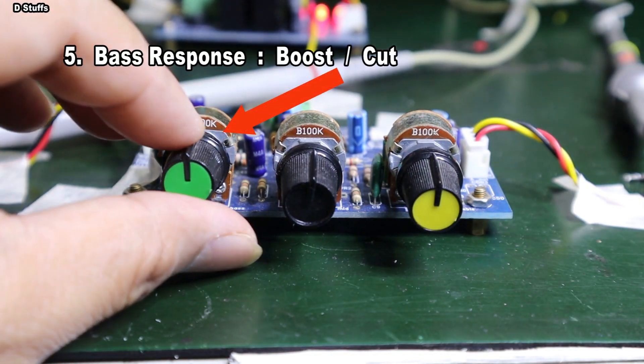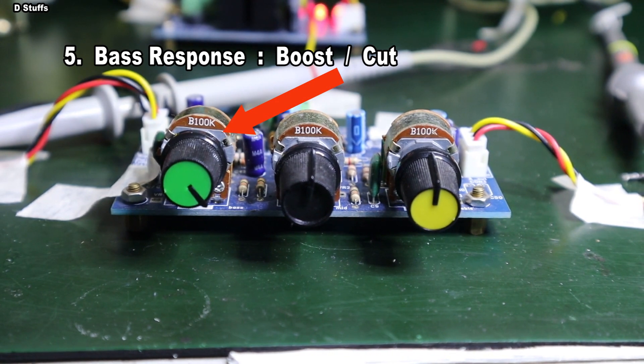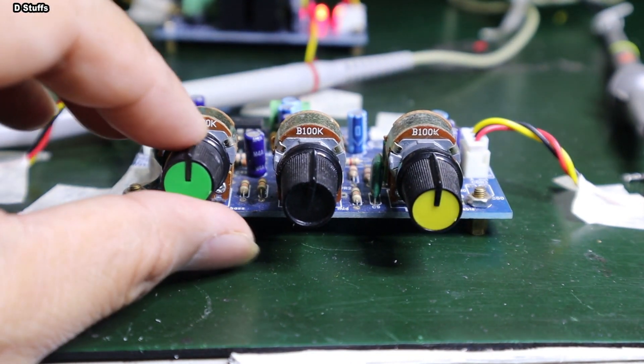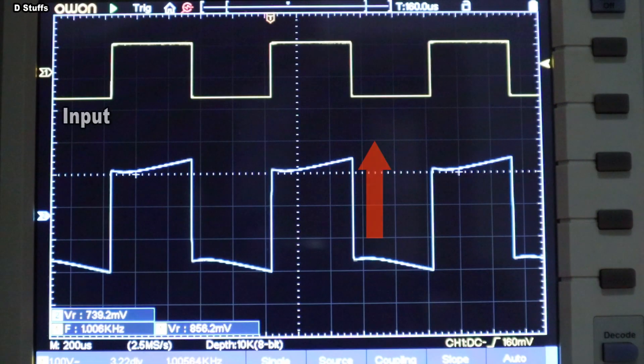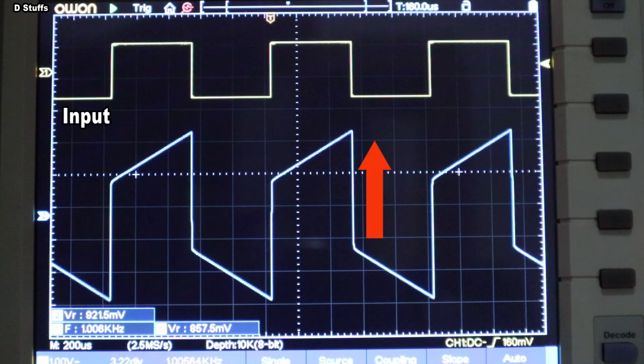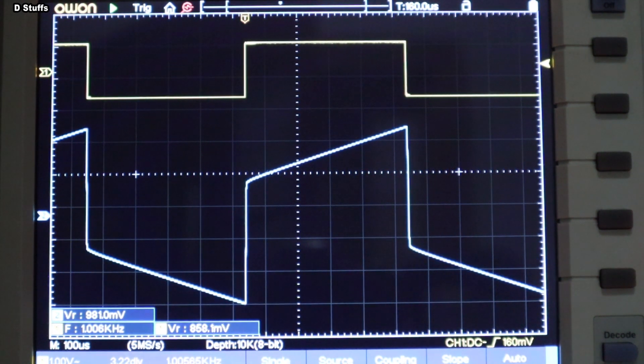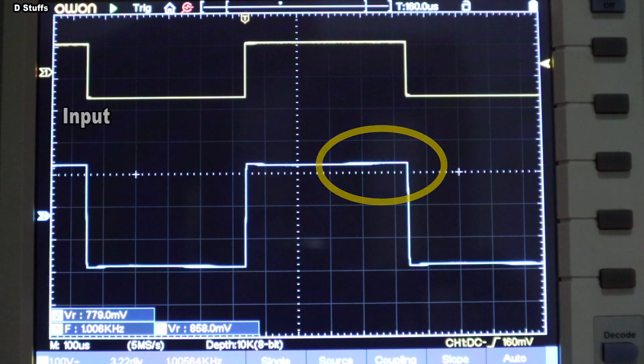The fifth test is the bass boost and bass cut. Bass boost is when you hear a deeper bass when you rotate the bass control clockwise, and the waveform when doing that is like this. As you can see, the right side of the square wave increases, it denotes the low-frequency part of the signal.